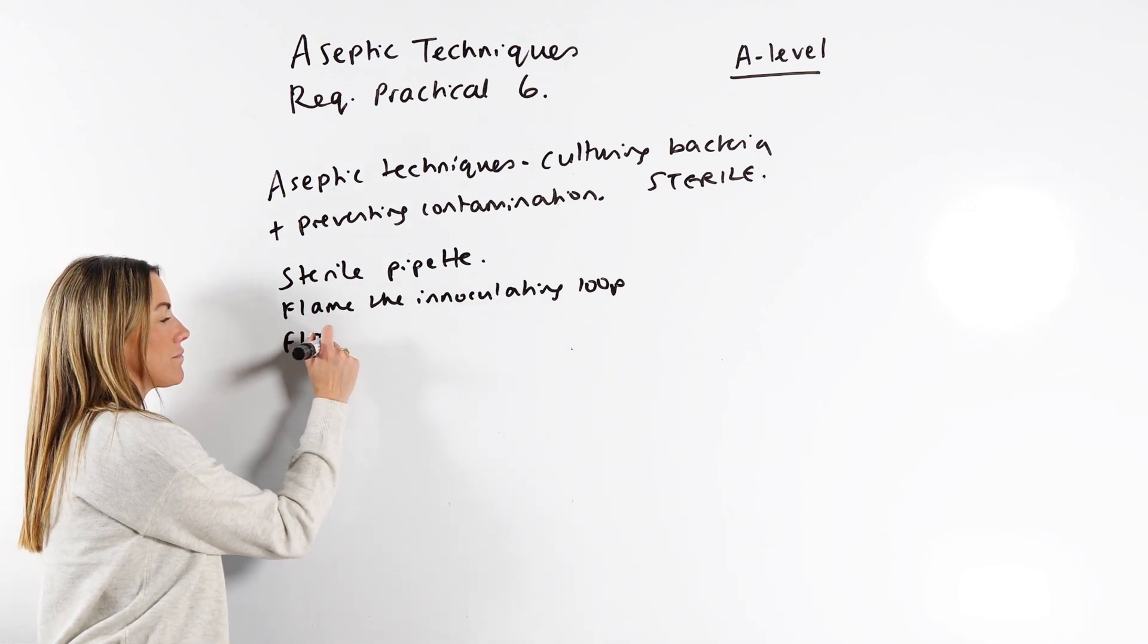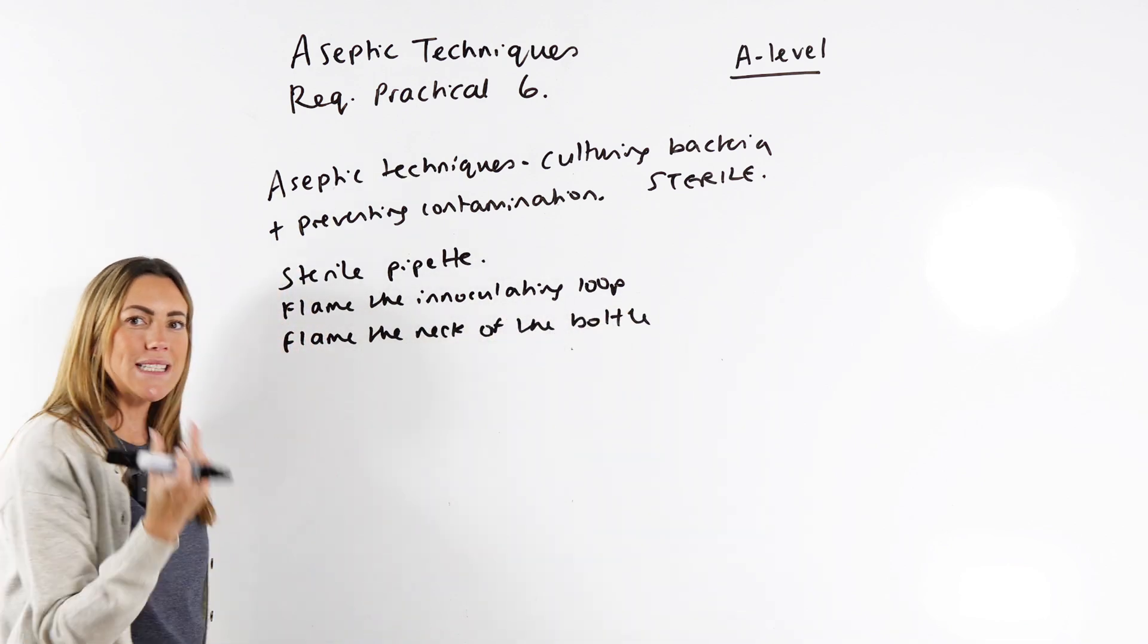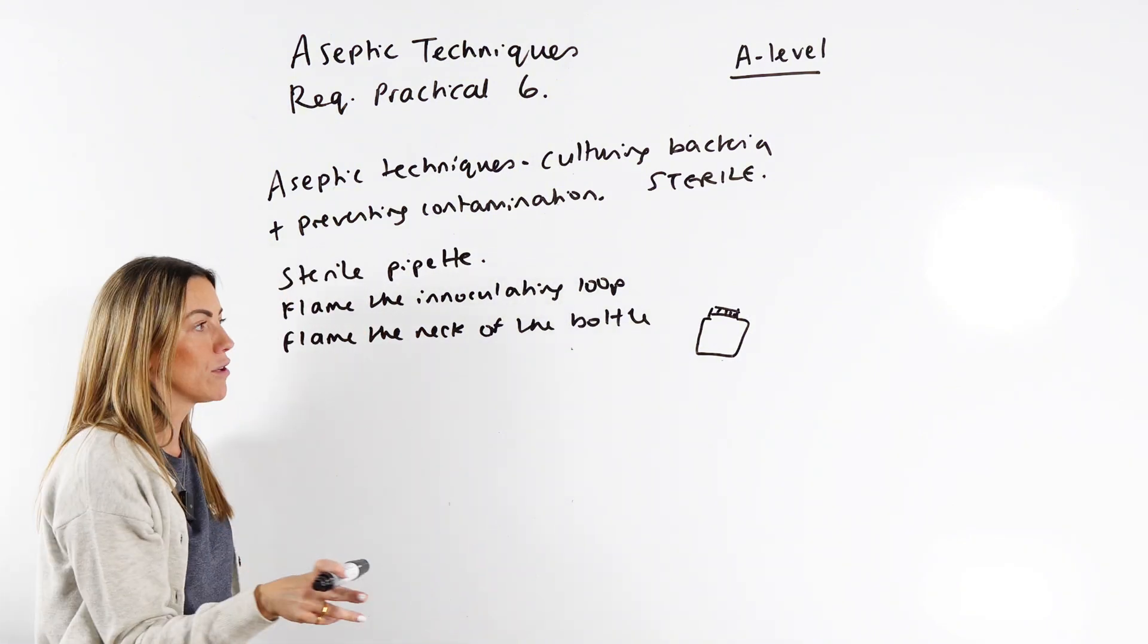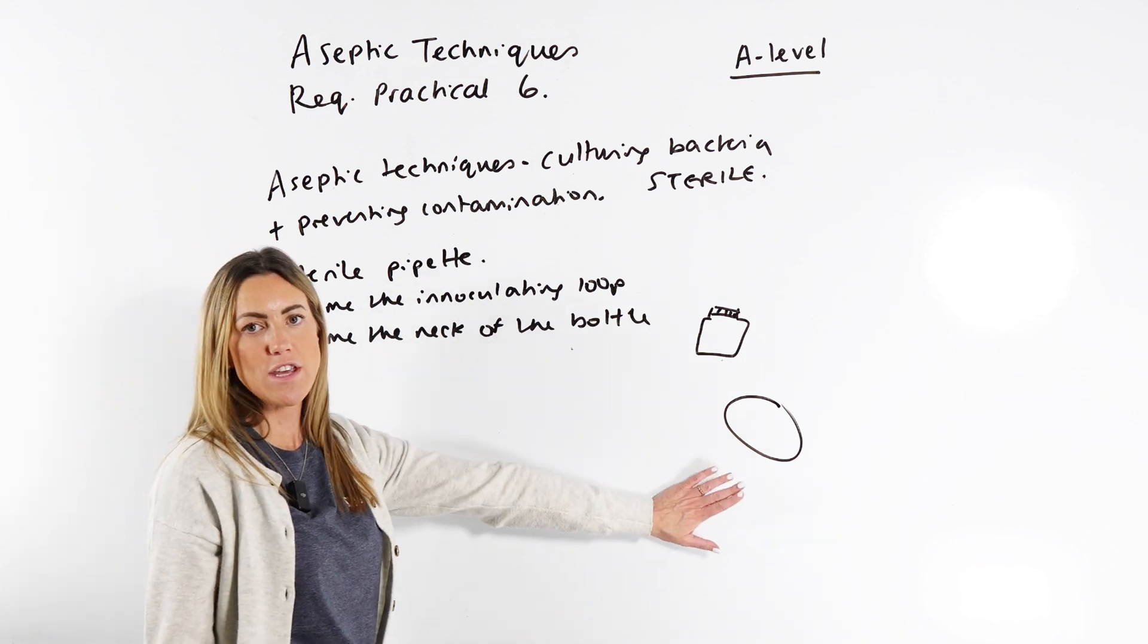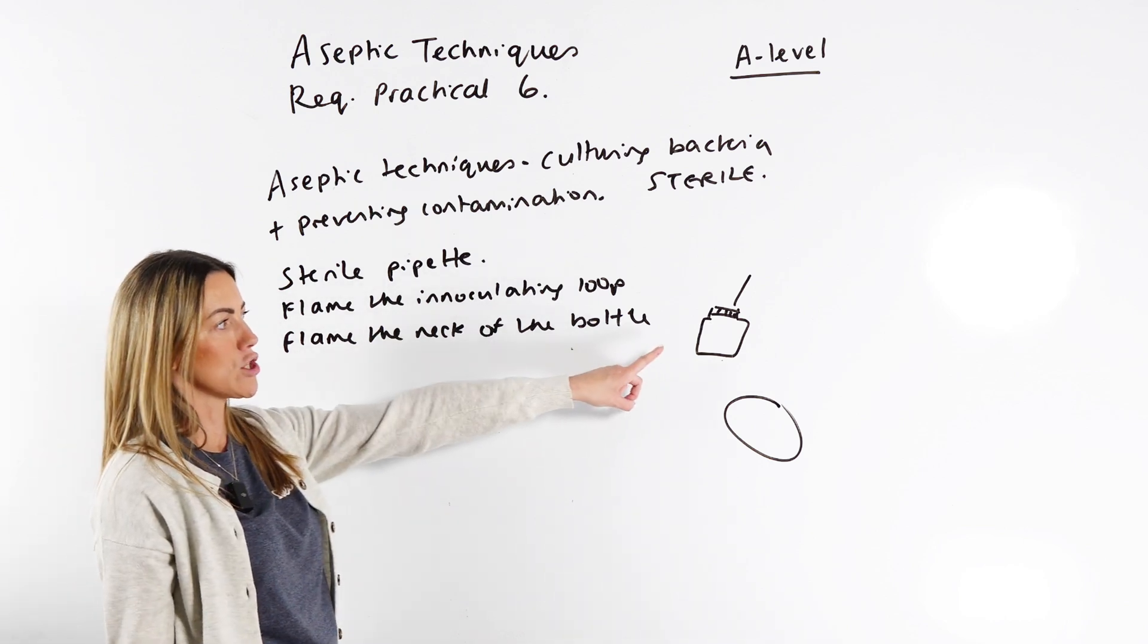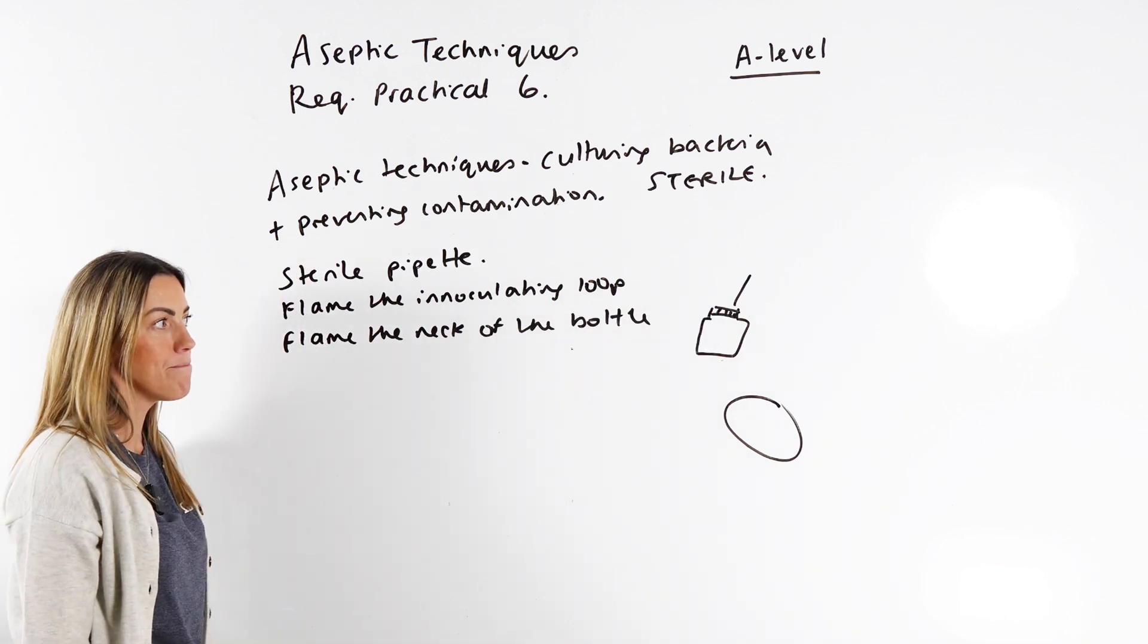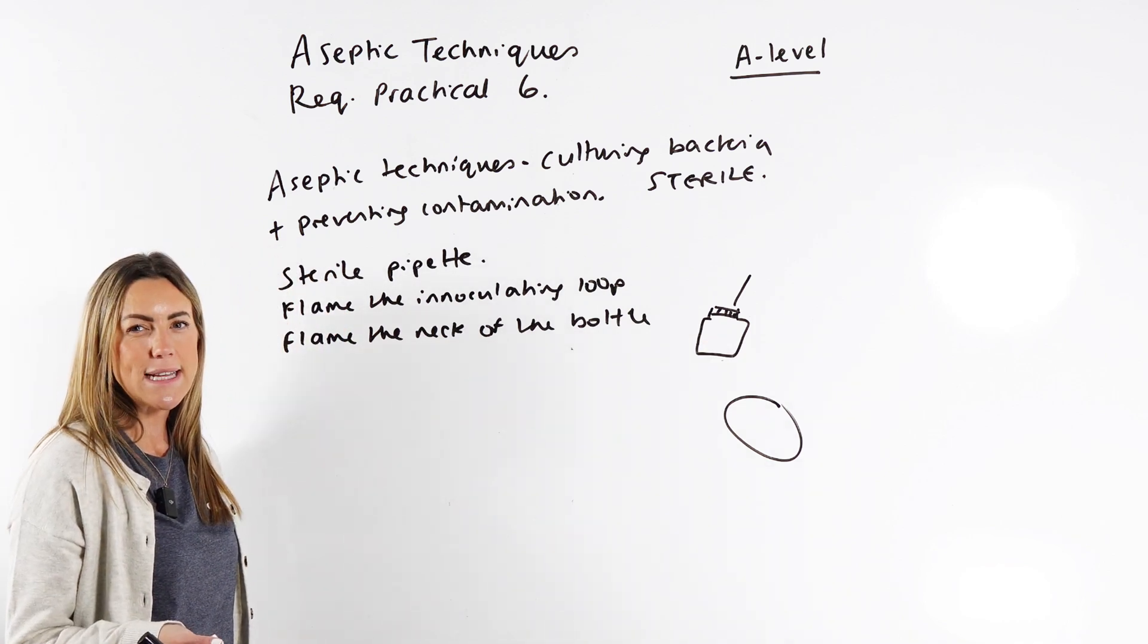You can also flame the neck of the bottle. So the bacteria that you're culturing, you're probably transferring it from a little bottle. It's called a McCartney bottle by the way. You're probably getting it out of this bottle and transferring it onto your petri dish where you've got your agar jelly. Now when you're putting your pipette or your inoculating loop into this bottle, there might be some contaminating bacteria on the neck of that bottle. So you can pass the neck of the bottle through a flame to kill any contaminating bacteria that might get onto your pipette or your inoculating loop.